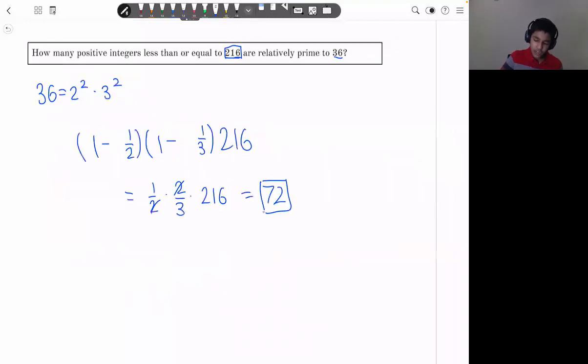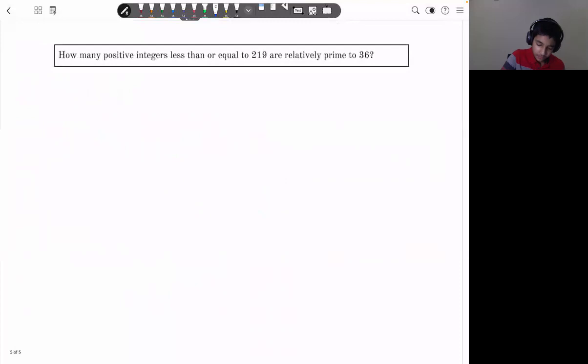And now we're going to try a very similar problem, except instead of 216, it's 219. So going by our standard methods, we might just think, okay, so we know that 36 is 2 squared times 3 squared. So it should just be 1 minus 1 half times 1 minus 1 third times 219. And if you actually evaluate this, you get something that's not even an integer. And that's clearly not possible since it says positive integers. Of course it has to be an integer. So this is not correct.